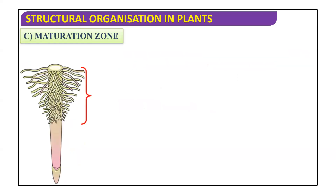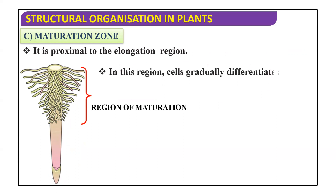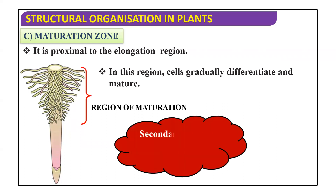The fourth region is the maturation zone, also called the region of maturation. It is proximal to the elongation region. In this region, cells gradually differentiate and mature. So differentiation and maturation of cells takes place in the region of maturation. Secondary growth also occurs in the maturation region.